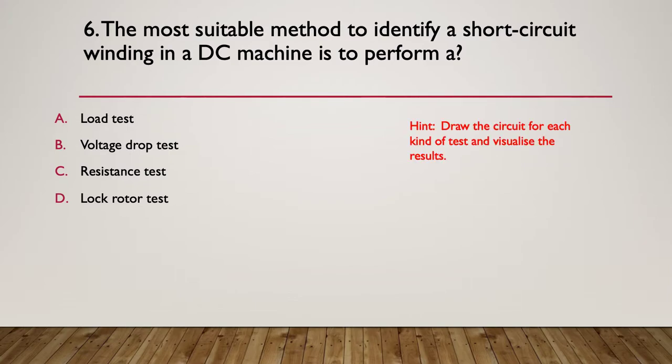So draw the circuit for each kind of test and visualize how you go about the results. So a voltage drop test is the best way to do that because if you've got a shorted winding you're going to get far less voltage drop. So if a winding's been shorted you're not going to get much voltage drop across it at all, so a voltage drop test is the best way to do it.